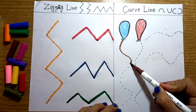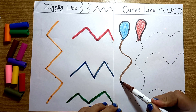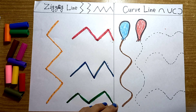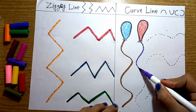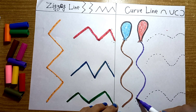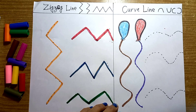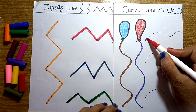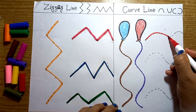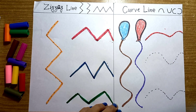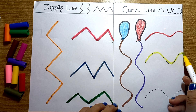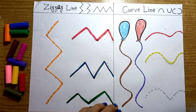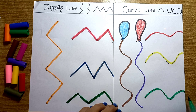Next is curved. Right curved, left curved. Up curved, down curved. Up curved, down curved.